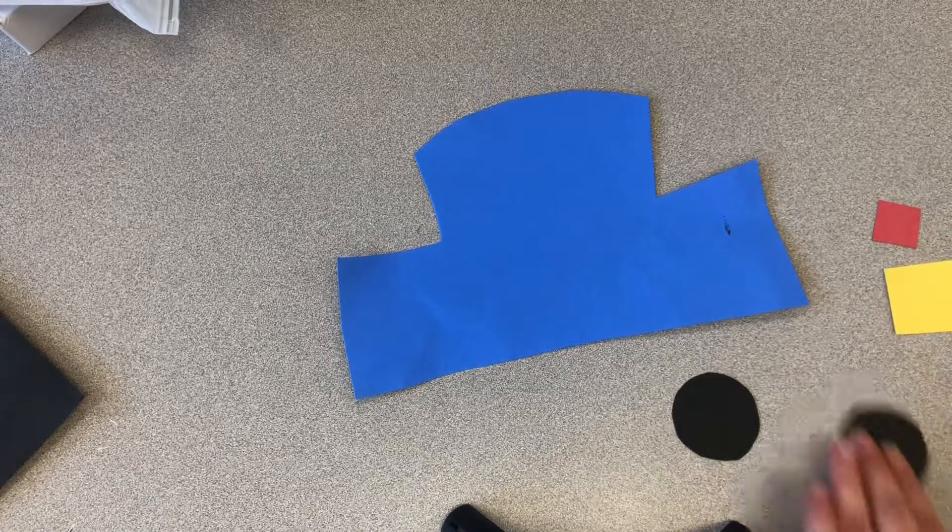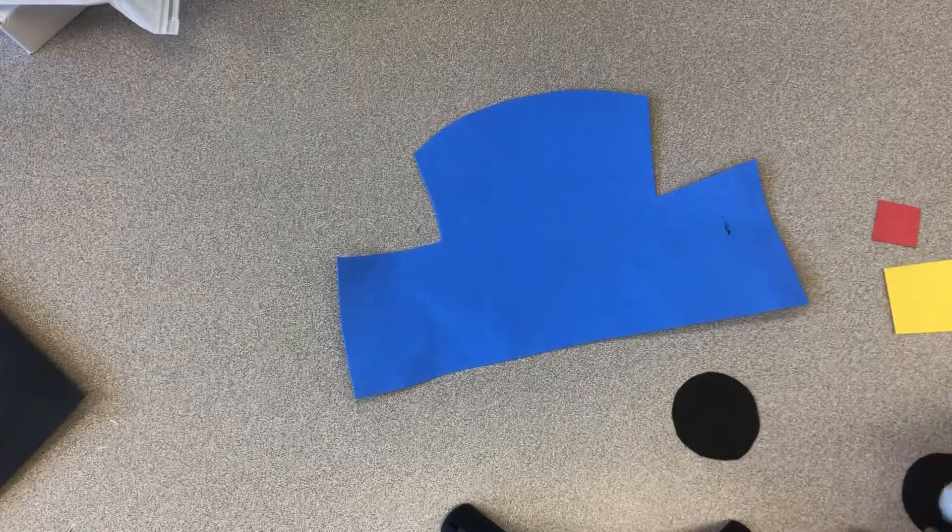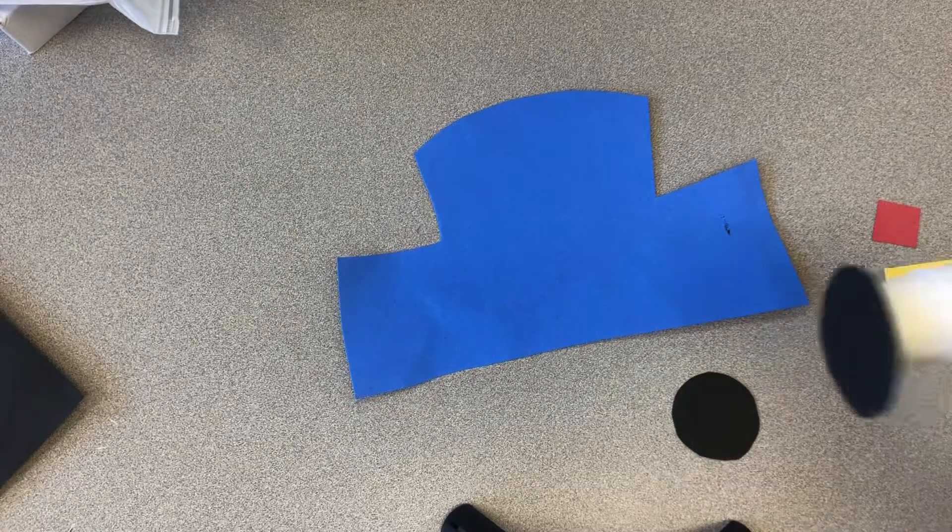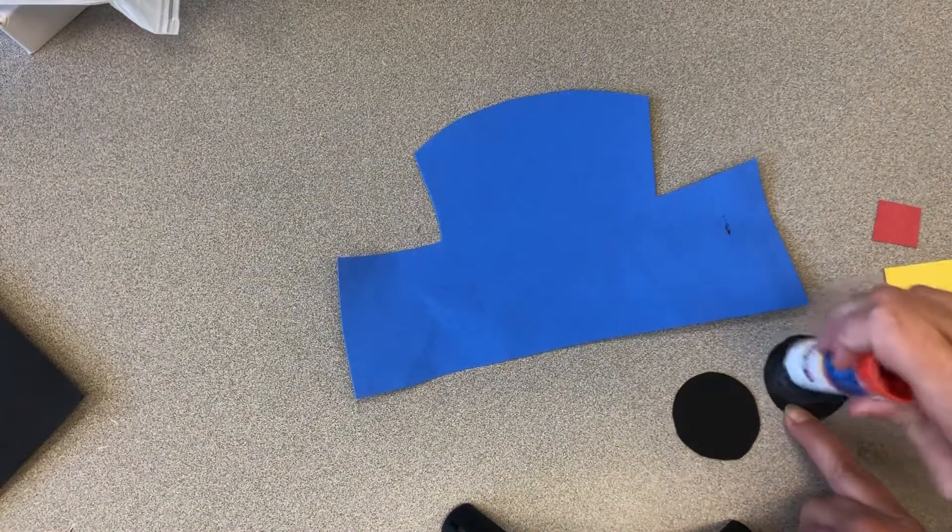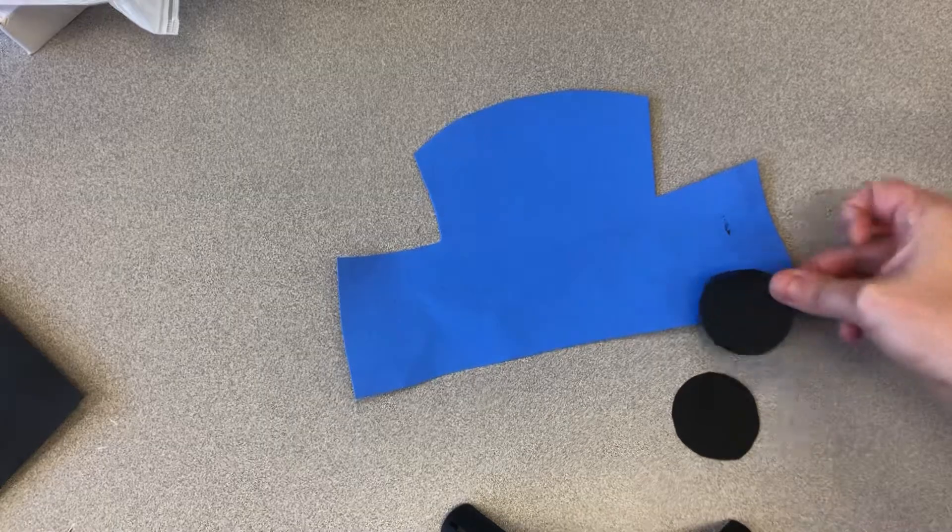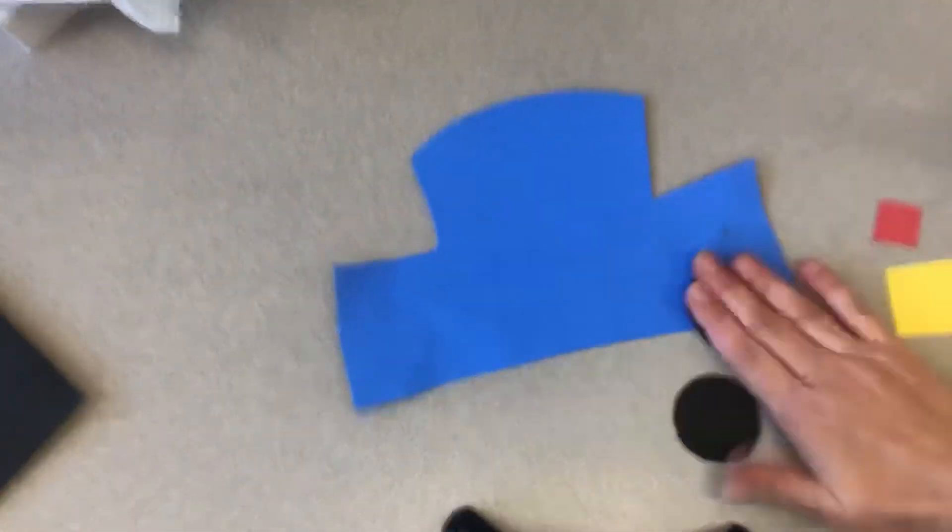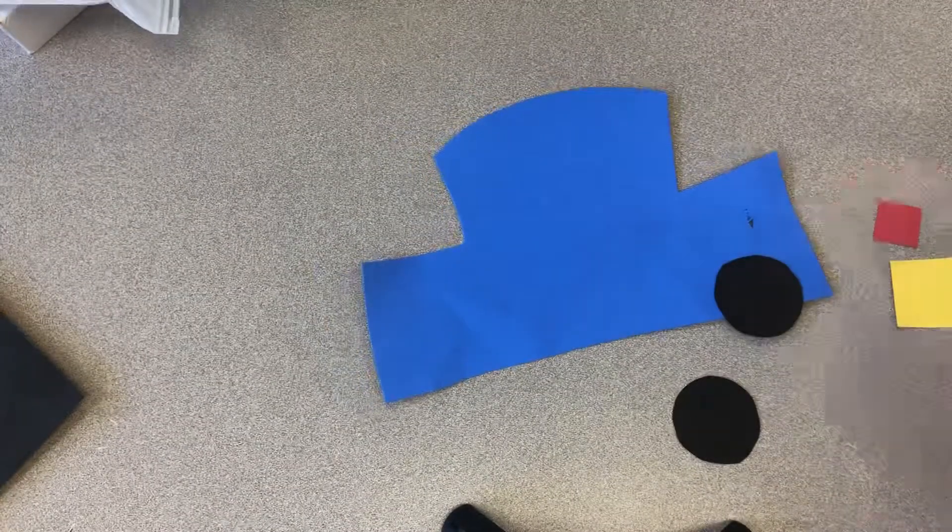So let's start with the black wheels or black circles. We're gonna get our glue stick out, we're gonna go round and round, and then we're gonna stick it on there, pat it on.